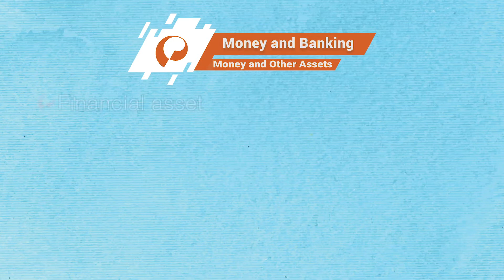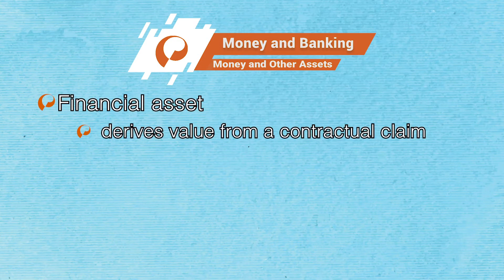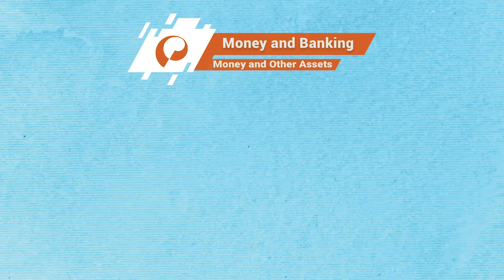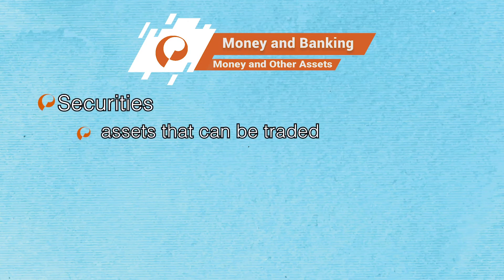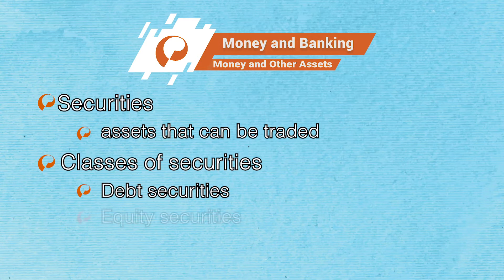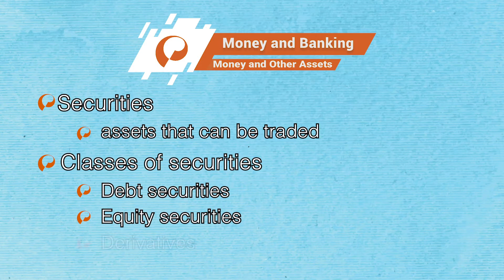Money is a type of financial asset — an asset that derives value from a contractual claim. A loan is a type of financial asset that derives value from a contract stating that the borrower will pay money to the lender at some point in the future. Another important class of financial assets is represented by securities — financial assets that can be traded. There are three classes of securities: debt securities, which are tradable IOUs like banknotes and bonds; equity securities, which are standardized ownership shares like common stock; and derivatives, which are contracts where flows of money depend on the realization of uncertain events like futures, options, and swaps.